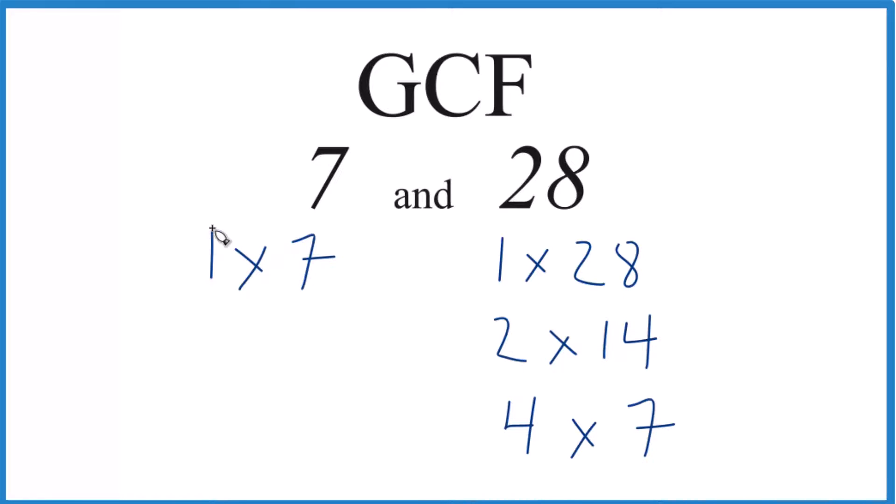So we have our factors. Now we find the common factors: 1, that goes into 7 and 28 evenly, and 7, that goes into 7 and 7 goes into 28 evenly. So the greatest common factor, that's going to be 7. So that's it, that's the GCF for 7 and 28.